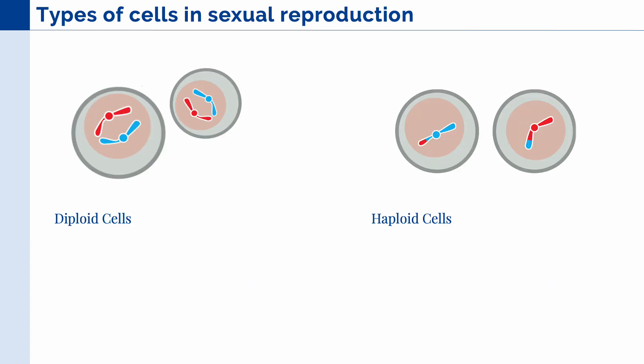In this lecture, we will be talking more about sexual reproduction. The first thing we need to learn are the different types of cells involved in sexual reproduction.